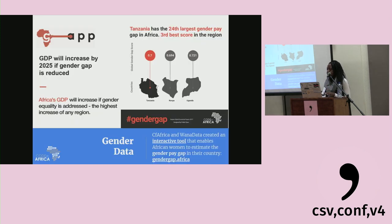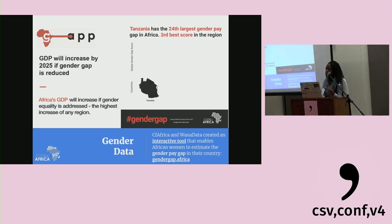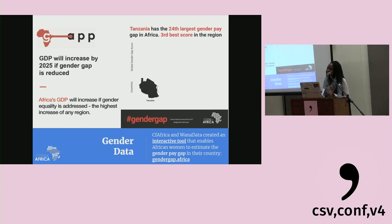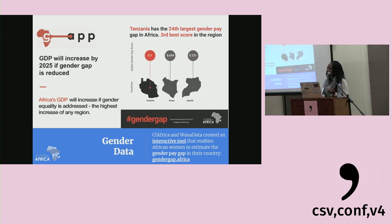An example of a project Wana Data took up early on: we took gender data from the World Economic Forum's gender pay gap report and used it to build a website where you can choose an African country, put in a salary and your gender, and see what the other gender earns in contrast. Overwhelmingly it shows women earning less. It's really striking to see it visually — if I tell you women in Kenya earn 55% less than men, that's abstract, but if you see the bar halfway across, it hits differently.